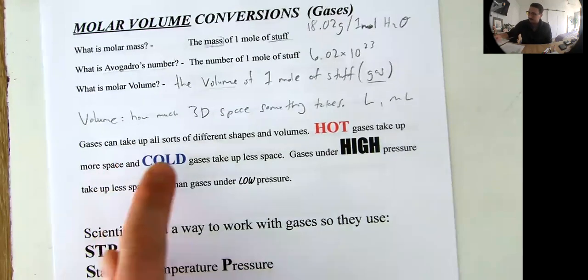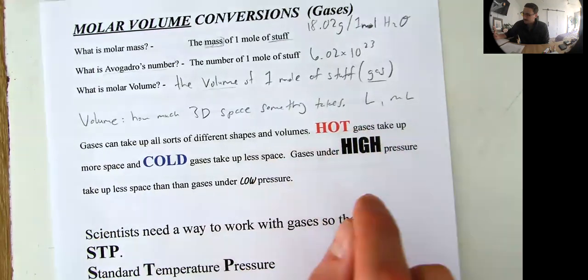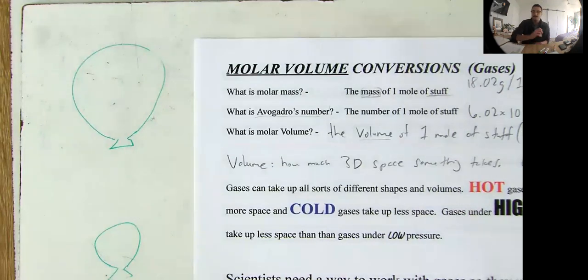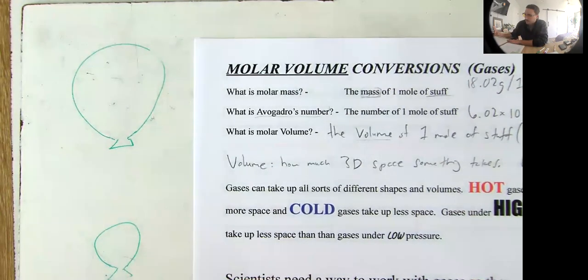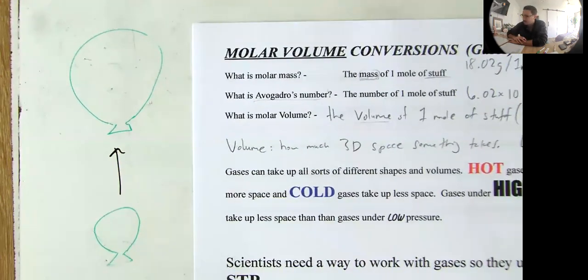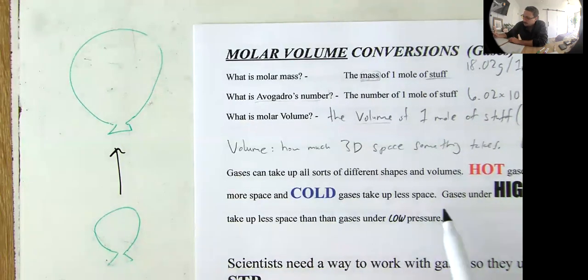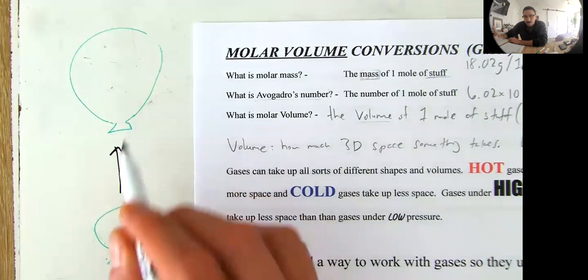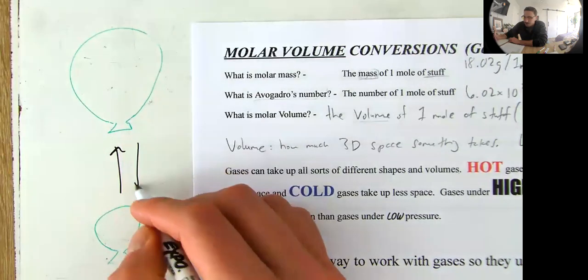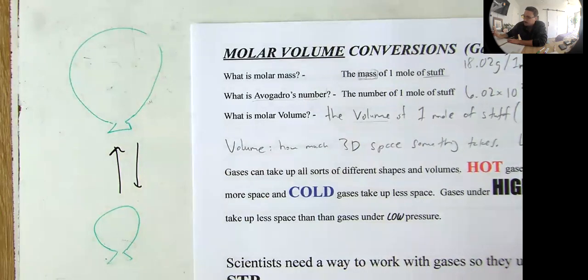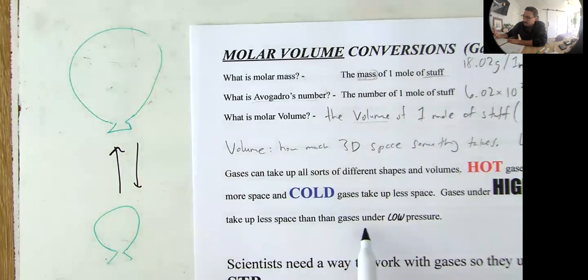Okay. Gases can take up all sorts of different shapes and volumes. Hot gases take up more space. See these balloons right here? So here's these balloons. If I took this balloon on the bottom and I heated it up, it will take up more space and become like a larger balloon. Yes, that's true. It happens. And then it says, and cold gases take up less space. So if I took this balloon on the top and I made it really cold on the outside, it would cool all those gas particles on the inside of the balloon. It would turn into a balloon that's smaller.